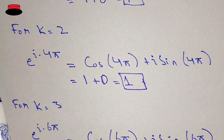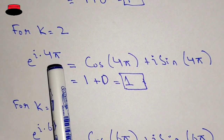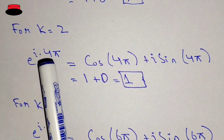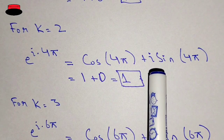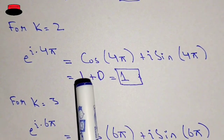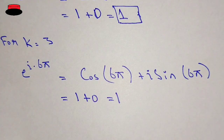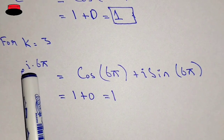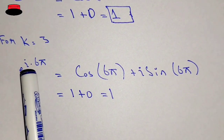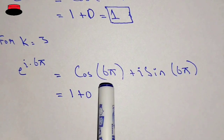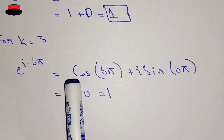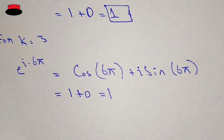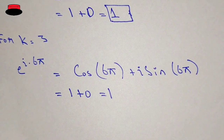Putting k equal to 2, e^(i·4π) equals cos(4π) plus i·sin(4π), so 1 plus 0 equal to 1. Similarly, putting k equal to 3, e^(i·6π) equals cos(6π) plus i·sin(6π), so 1 plus 0 equal to 1. We observe that whatever value of k we put, the answer is always 1. Therefore e^(i·2kπ) is equal to 1.